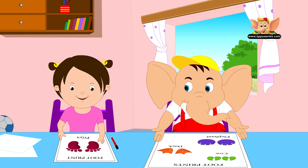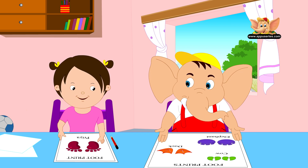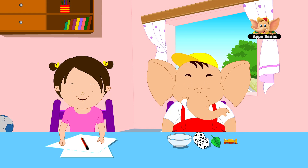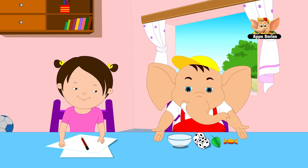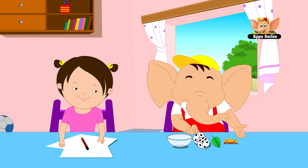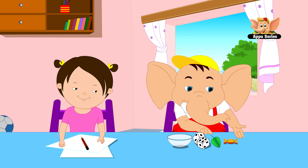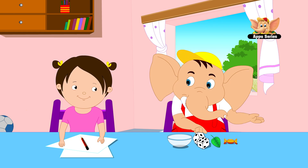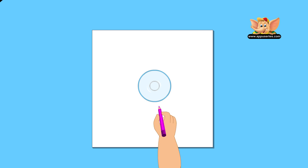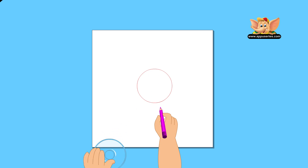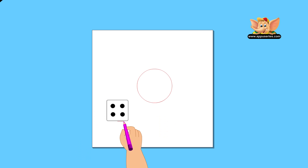Let me give you a small activity to do yourself. Collect different objects, like a bowl, glass, leaves, or anything you like, even candy, and trace them to see what shape they form. See if you can find basic shapes in your tracing and name them.